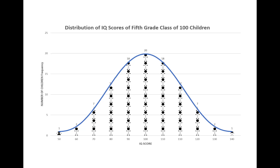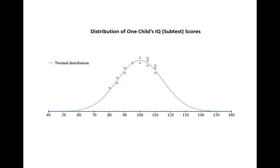And I know you're ahead of me, but if we added all of the IQ scores and divided by the 100 children, we'd get the average of 100. This is somewhat helpful in understanding test scores, but the next graph is even more interesting as it reveals a lot more information.